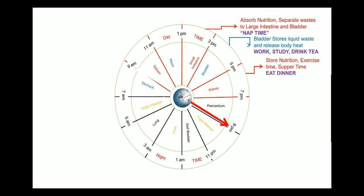Between 7 pm to 9 pm is the period of the pericardium. During this period, the pericardium can remove pathogens around the heart. You should be socialized and have fun between 7 pm to 9 pm, because when you are involved in socialization and enjoying yourself, the functions of the heart are reduced as the demand from tissues and organs decreases. This allows the pericardium to perform the cleaning process around the heart.